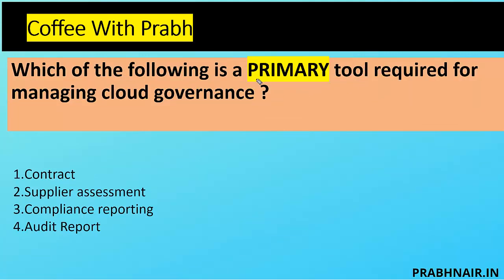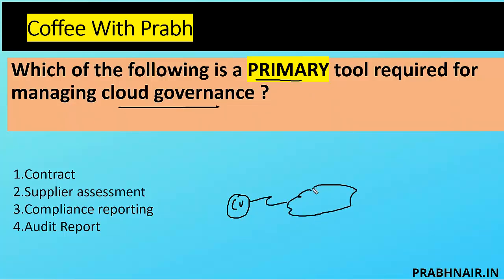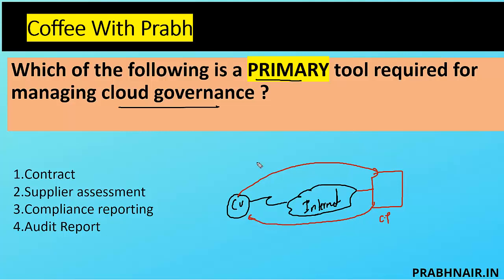Next coffee short: which of the following is the primary tool required for managing cloud governance? The keyword is 'primary tool.' We have a cloud user, an internet, and a cloud provider. The customer gets a service from the cloud provider as per the contract. Anything which is not in the contract — no one will take accountability for that. A contract is a very close option. Second is supplier assessment, which is good for due care and due diligence.